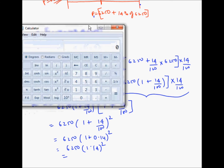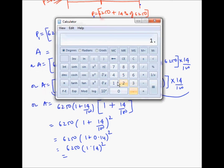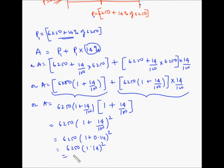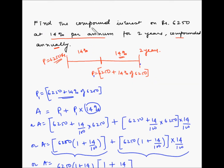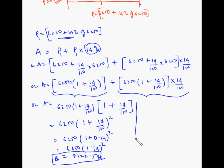Using a calculator: 1.14 squared, then multiplied by 6250, gives 8122.5. So the amount at the end of 2 years is 8122.5 rupees. Now we need the compound interest, which is the total amount at the end of 2 years minus the original investment of 6250 rupees. So compound interest = 8122.5 − 6250.